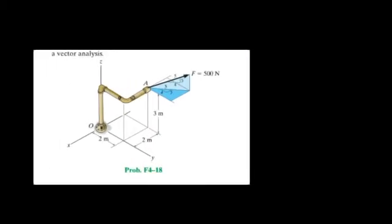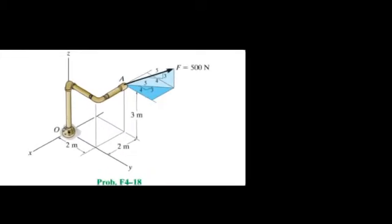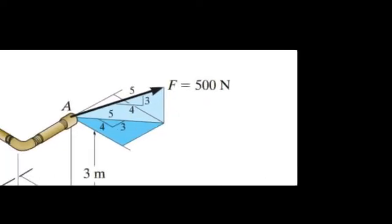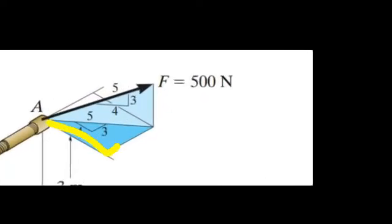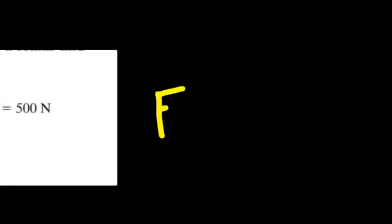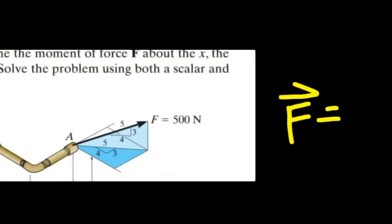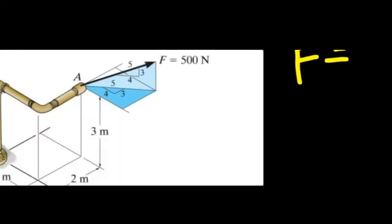Let's look at the figure. We immediately see these triangles. Let's get the components of vector F. The component of vector F along the Z axis first — sine theta is going to be three-fifths.